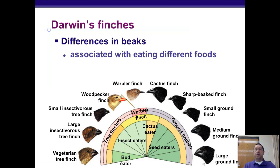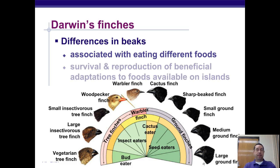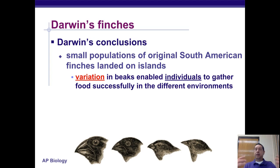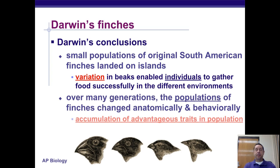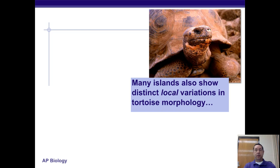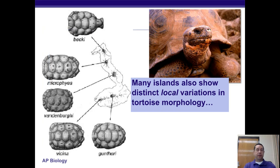The main differences Darwin noticed among the finches, beyond some color variation, were their beaks, which were adapted to what they ate. His conclusion was that a small population of original South American finches landed on the islands. Different parts of the island had different foods available, and individuals best at getting food had certain beak variations that became more common in those populations, eventually leading to 14 different species. He also looked at different tortoises on different Galapagos islands, observing variation in their shell structures based on food availability.